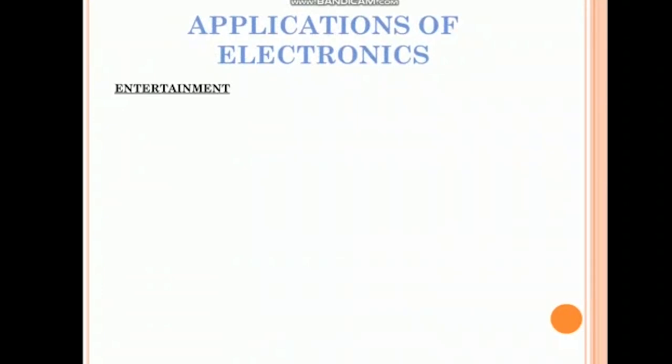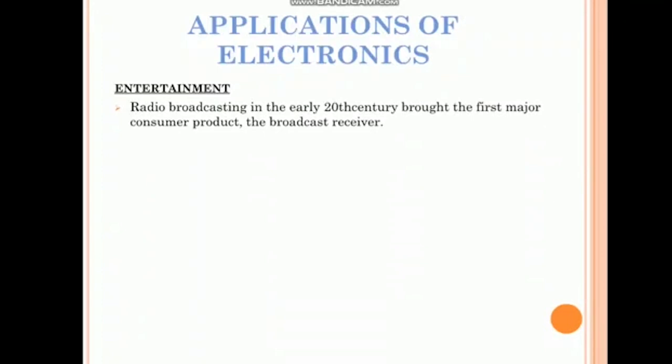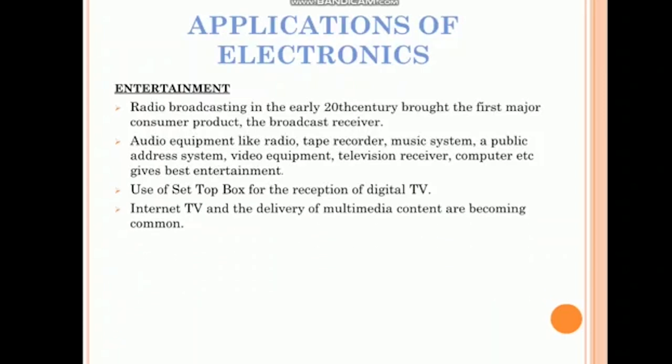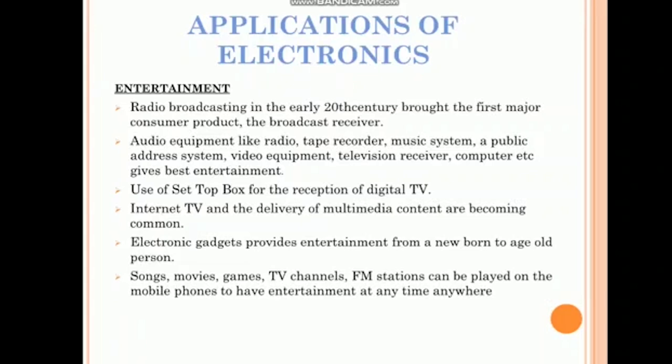Entertainment. Radio broadcasting in the early 20th century brought the first major consumer product the broadcast receiver. Audio equipment like tape recorder, radio, music system, public addressing system, television receiver, computer gives us best entertainment. Satellite radio can be received in a much wider geographical area than terrestrial FM radio stations. Use of setup box for the reception of digital TV, in particular high definition broadcasting, internet TV and the delivery of multimedia content are becoming in common. Songs, movies, games, TV channels, FM stations can be played on the mobile phones to have entertainment at any time anywhere.